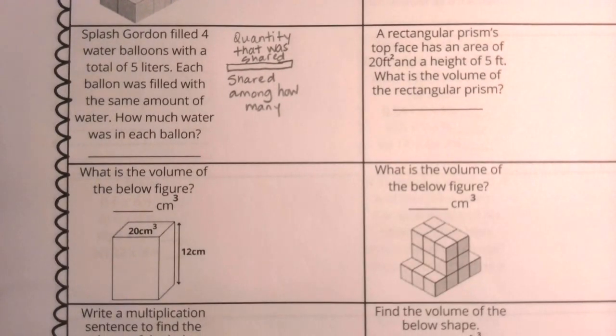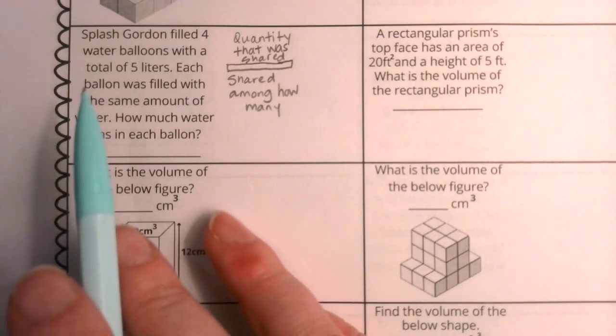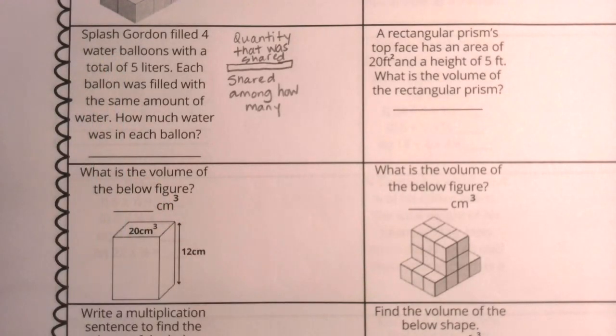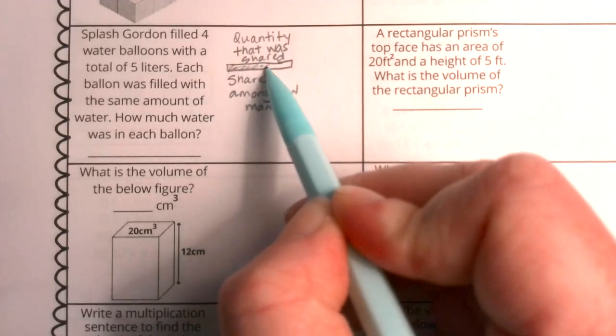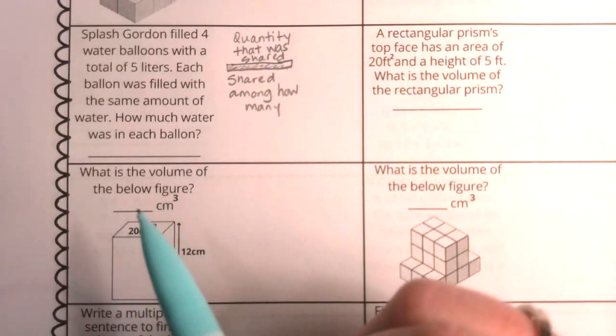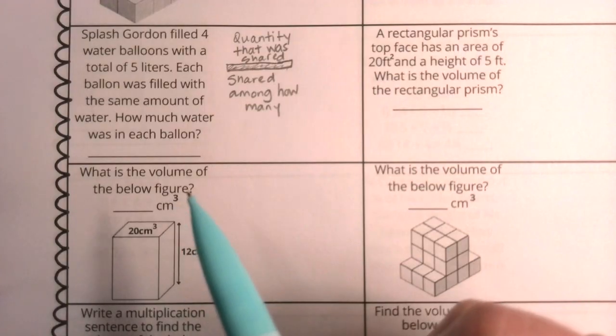Our second question is really homework from last week today, and we're thinking about what we've been talking about with fractions as quotients. Splash Gordon filled four water balloons with a total of five liters of water. Each balloon was filled with the same amount of water. How much water was in each balloon? Remember what we've talked about with fractions as quotients. Our top value is the quantity that was being shared.